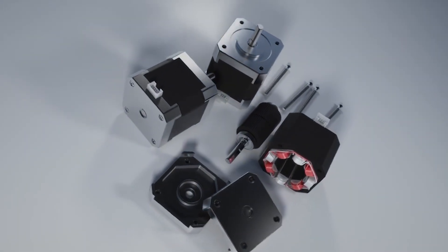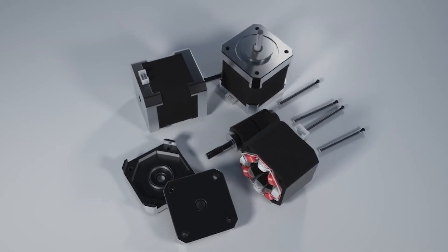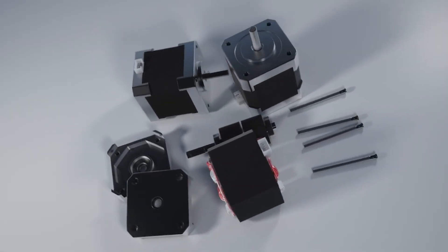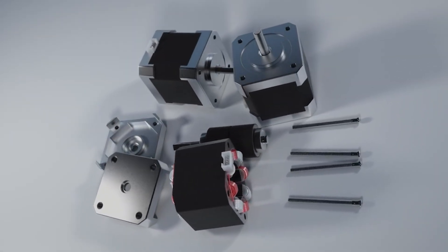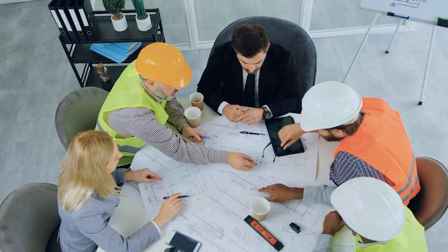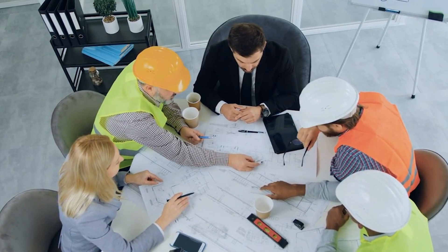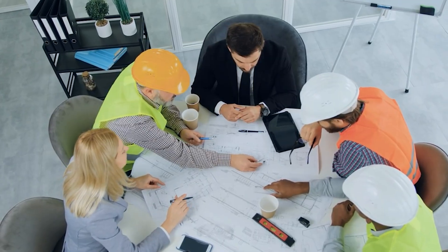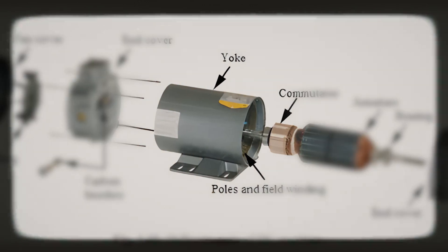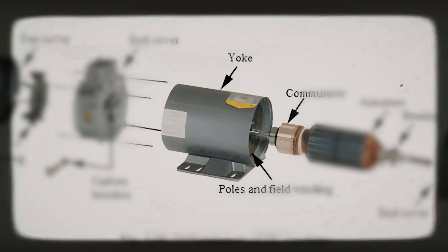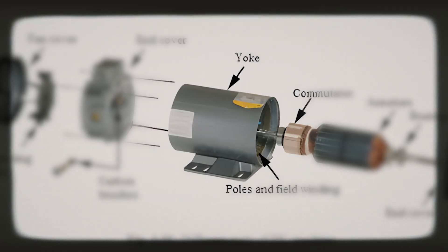While the yoke is essential for making traditional motors work, it also adds weight and does not contribute directly to producing torque. It is a passive part. And because of that, engineers have always wondered if there was a better way. Removing the yoke, however, creates new problems. Problems that DeepDrive spent years trying to solve.